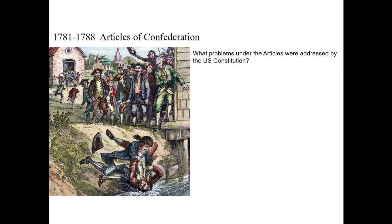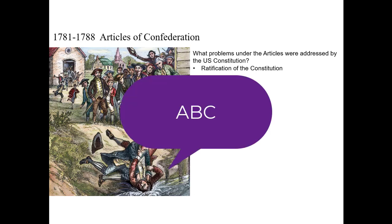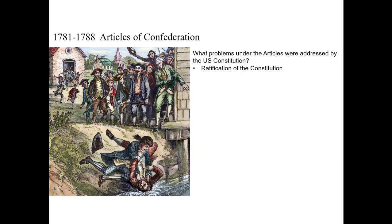Let's look at the major problems under the Articles of Confederation. First, ratification: the Articles needed all 13 states to ratify the constitution. Keep in mind, the Articles of Confederation was our first constitution — our U.S. Constitution was the second. When they wrote the second constitution, they learned from this problem and only required nine states to ratify it.